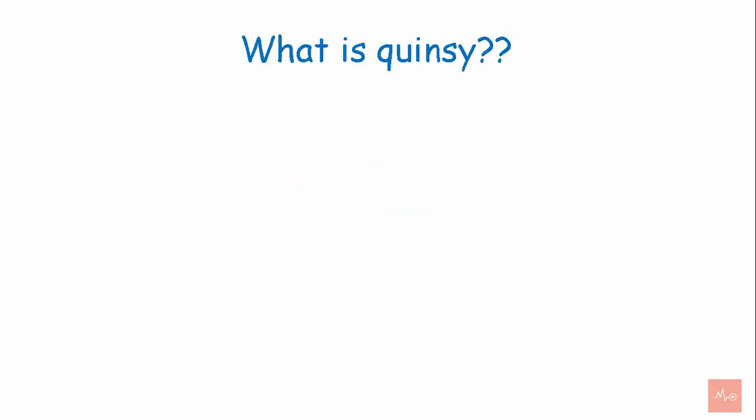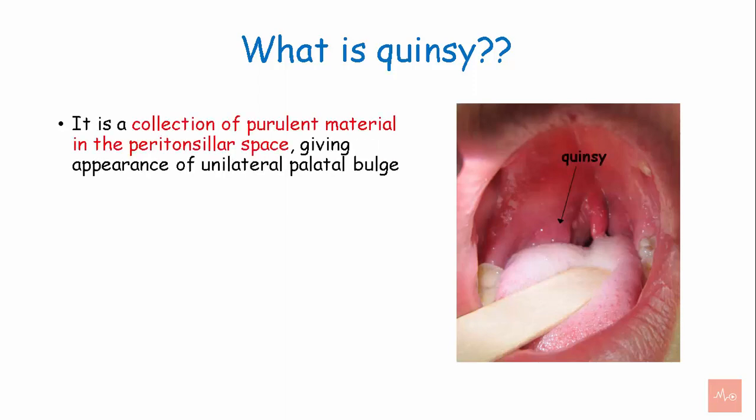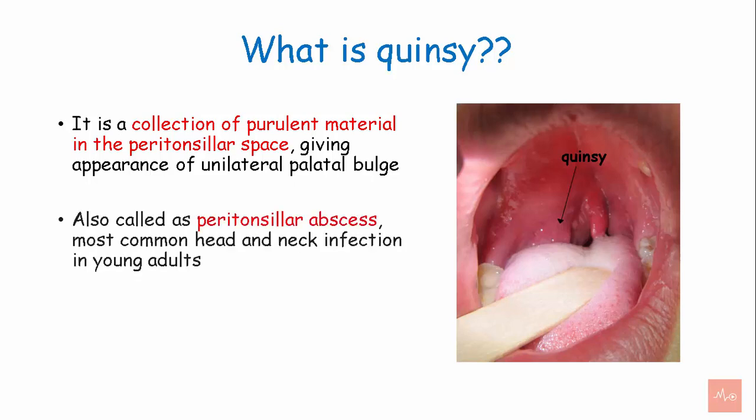Welcome back to MediClass. What is Quincy? It is a collection of pus in the peritonsillar abscess giving appearance of unilateral palatal bulge. It is also called as peritonsillar abscess, the most common head and neck infection in young adults. It was first described in the 14th century.